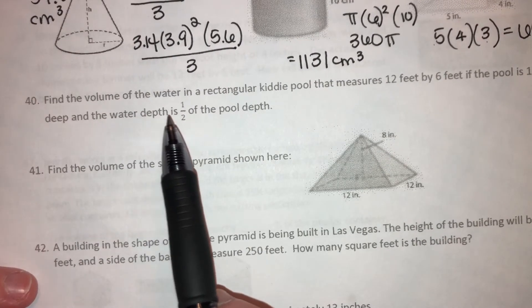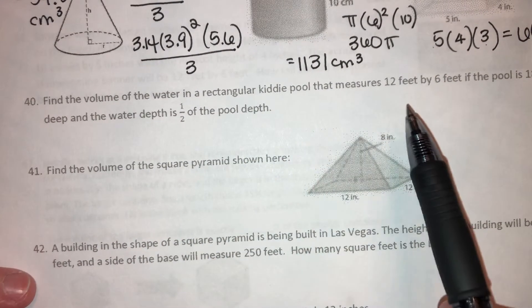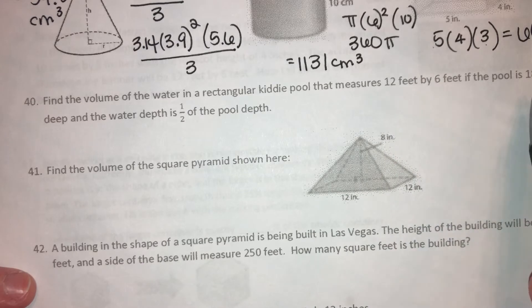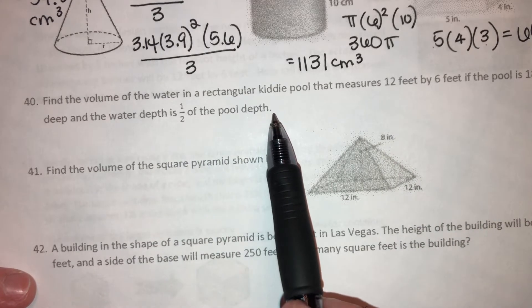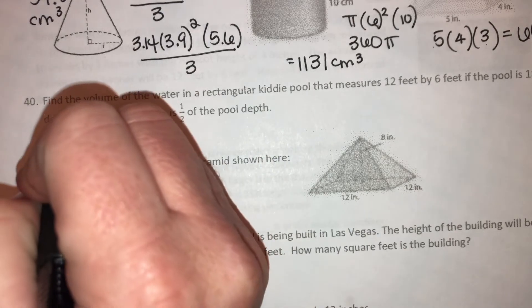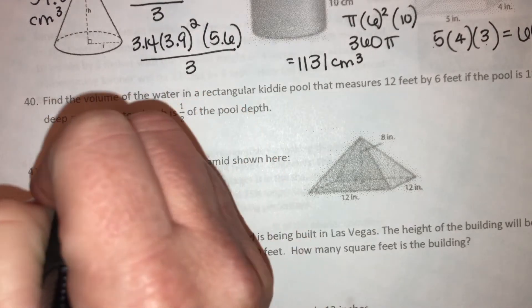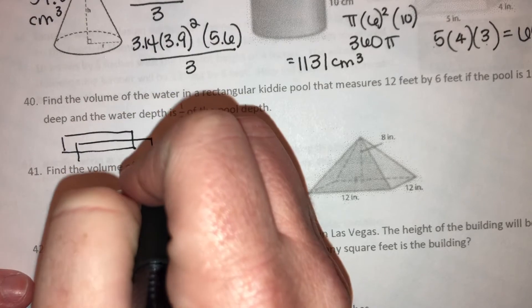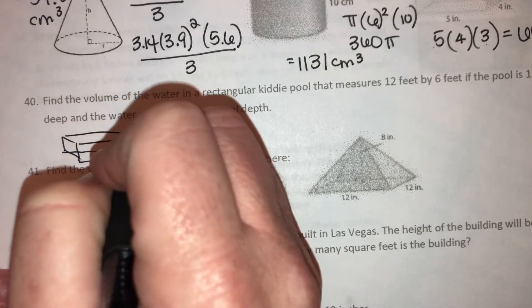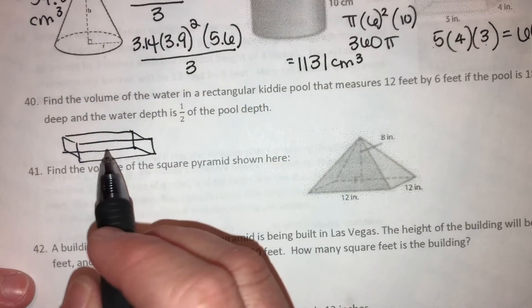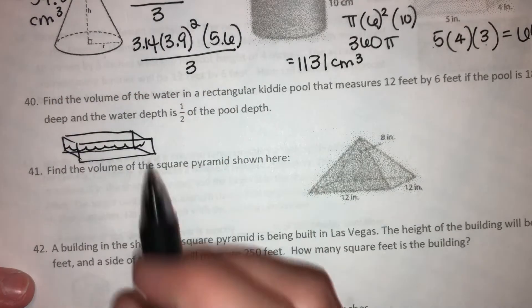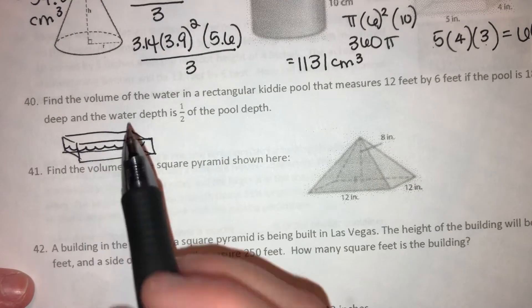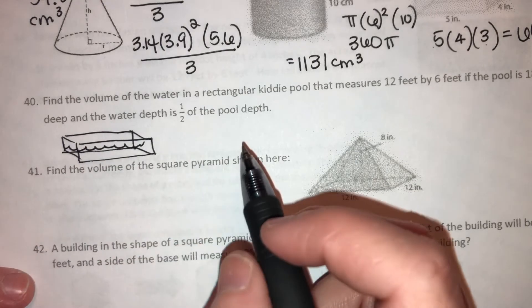All right, number 40. Find the volume of the water in a rectangular kiddie pool that measures 12 feet by 6 feet if the pool is 18 inches deep and the water depth is half of the pool depth, right? So we're looking at a rectangular kiddie pool, something like this, right? And it's half filled with water. So we can do a little water level half up.